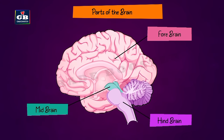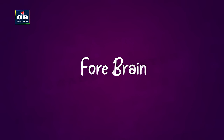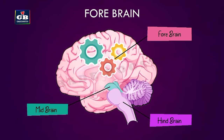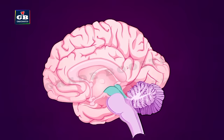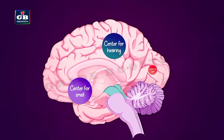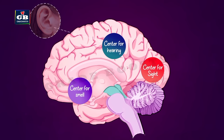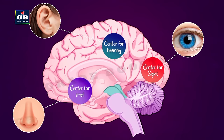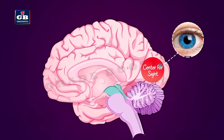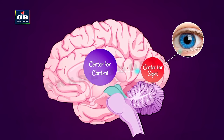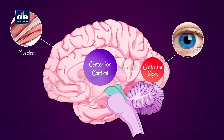The brain has three main parts: the forebrain, midbrain, and hindbrain. Thought processes take place in the forebrain. The forebrain has regions that receive sensory impulses from various receptors and has different centers for hearing, smell, sight, and other senses.